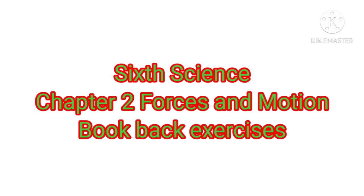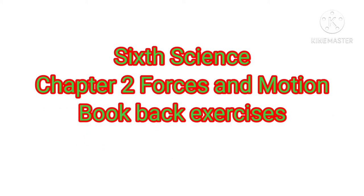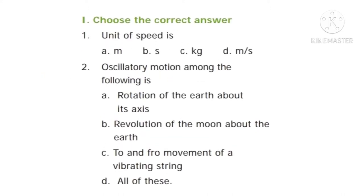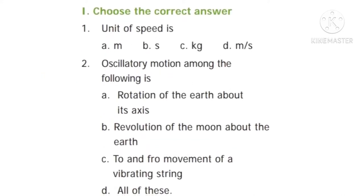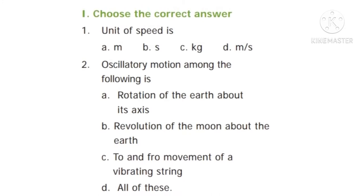Today we are going to see Class 6 Standard Signs, Chapter 2: Forces and Motion — book path exercise. First, choose the correct answer. Question number one: unit of speed is — option A: m, option B: s, option C: kg, option D: m per s. The correct answer is option D, m per s.